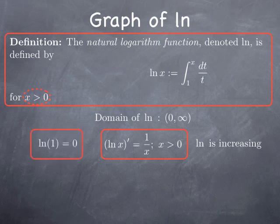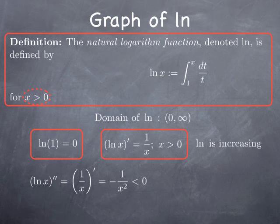We've also observed that the natural log takes the value 0 at 1, so the graph goes through the point (1, 0). On the other hand, the second derivative of the function is the derivative of 1 over x, which I can write as x to the negative 1, giving negative x to the negative 2 — in other words, negative 1 over x squared. Since x squared is positive, this is always negative.